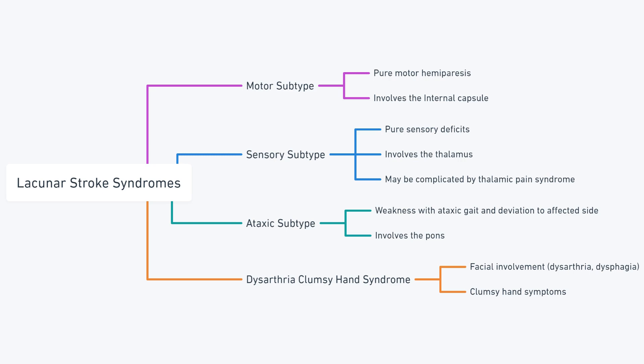The sensory subtype results in pure sensory deficits. This commonly involves the thalamus and may be complicated by thalamic pain syndrome, which is hemi-sensory loss or pain weeks to months after stroke.